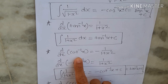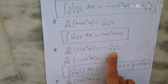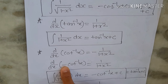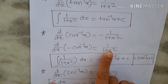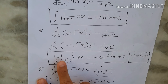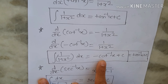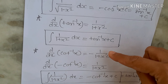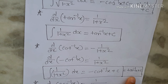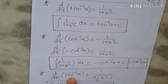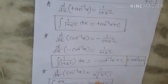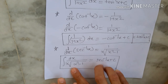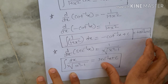d/dx of cot⁻¹x equals -1/(1+x²). Wherever there is a minus sign, we multiply both sides by -1 to get the formula: integral of 1/(1+x²) dx equals -cot⁻¹x plus c. Next, d/dx of sec⁻¹x equals 1/(x·√(x²-1)), so integral of dx/(x·√(x²-1)) equals sec⁻¹x plus c.